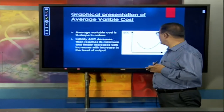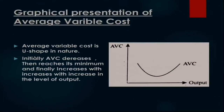Let us see the graphical presentation. At initial stage it is falling — as you divide the total variable cost by units of output, the curve is falling. Now it attains its minimum level. Why do we study this? Because this minimum level is the alarming bell for the producer-entrepreneur: you have minimized your cost. If you are willing to produce more units of output, you are bound to make additional expenditure for those extra units.